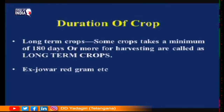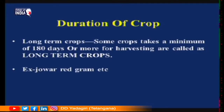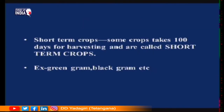There are two types of crops depending upon their duration — meaning how much time they take to mature. Some crops take more time for maturity, while some take less. Crops that take a minimum of 180 days or more for harvesting are called long-term crops; examples are jowar and red gram. Crops that take about 100 days are called short-term crops; examples are green gram and black gram.